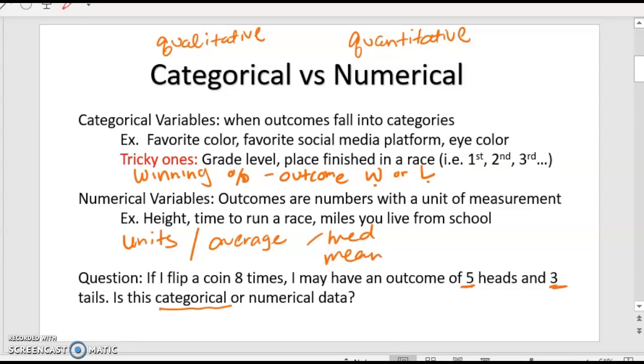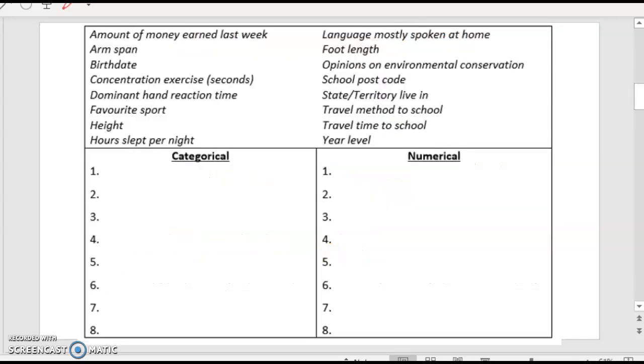Just kind of like a brief chart filling in to see how you do. This is just a bunch of types that you might see. So amount of money earned, obviously that's a dollar amount, so that's going to be your numerical. Arm span, so arm span is from your middle finger to your middle finger, and that's going to be like inches.